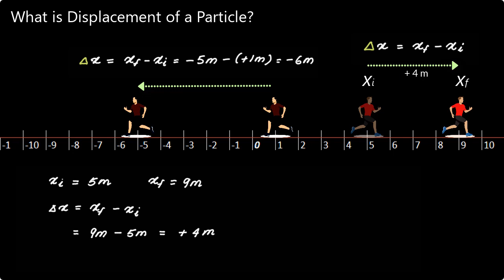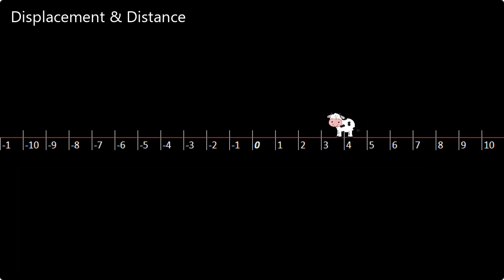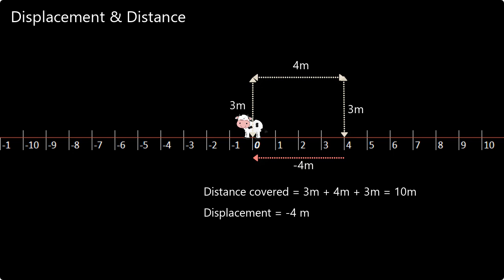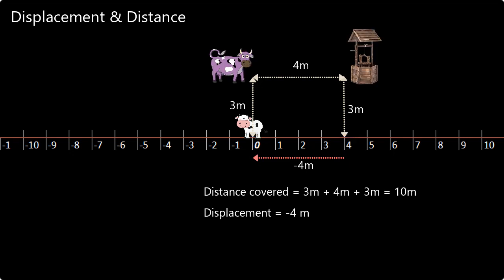Now we should understand the difference between displacement and distance. Say your cow moved from one point to another, to another, and finally came to rest somewhere. The distance covered by the cow is 3 meters plus 4 meters plus 3 meters, a total of 10 meters. But the displacement is only 4 meters. When we measure displacement, we do not worry about where all the cow went while moving between the two points — it could have gone to drink water or checked on the purple cow or whatever. All we are concerned with is the initial position and the final position. The magnitude of displacement is the shortest distance between the initial position and the final position, which can only be a straight line drawn between the two points.